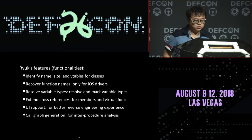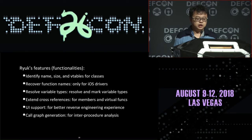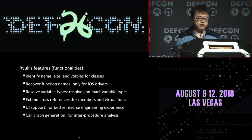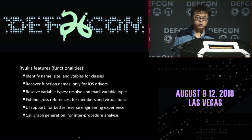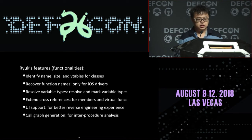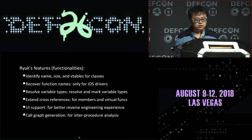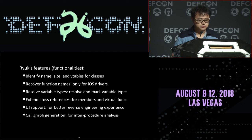RilK has several features: it can identify names, sizes, and vtables for classes; it can recover function names; resolve variable types; extend cross-references; extend UI support; and construct full call graphs.